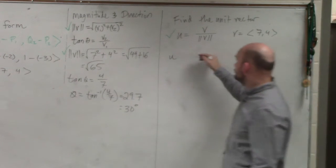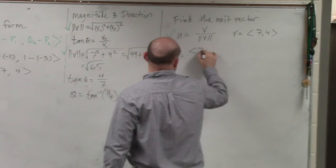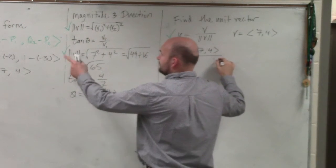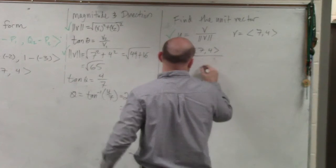and so if we're taking u, then that's basically going to be 7 comma 4 all over my magnitude, which is square root 65.